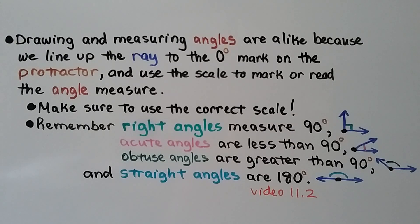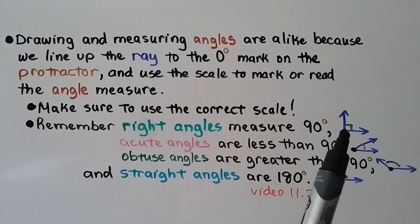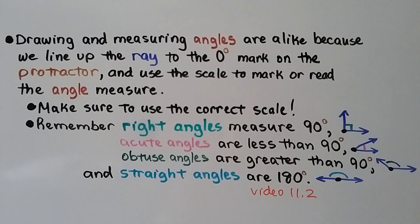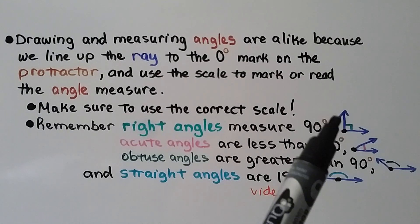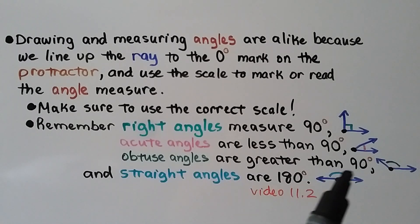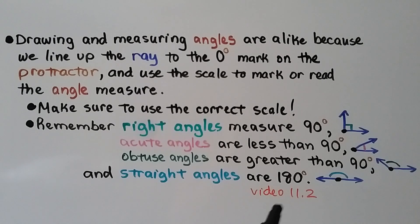Drawing and measuring angles are alike because we line up the ray to the zero degree mark on the protractor and use the scale to mark or read the angle measure. Make sure to use the correct scale — inside or outside. Remember: right angles measure 90 degrees, acute angles are less than 90 degrees, obtuse angles are greater than 90 degrees, and straight angles are 180 degrees.